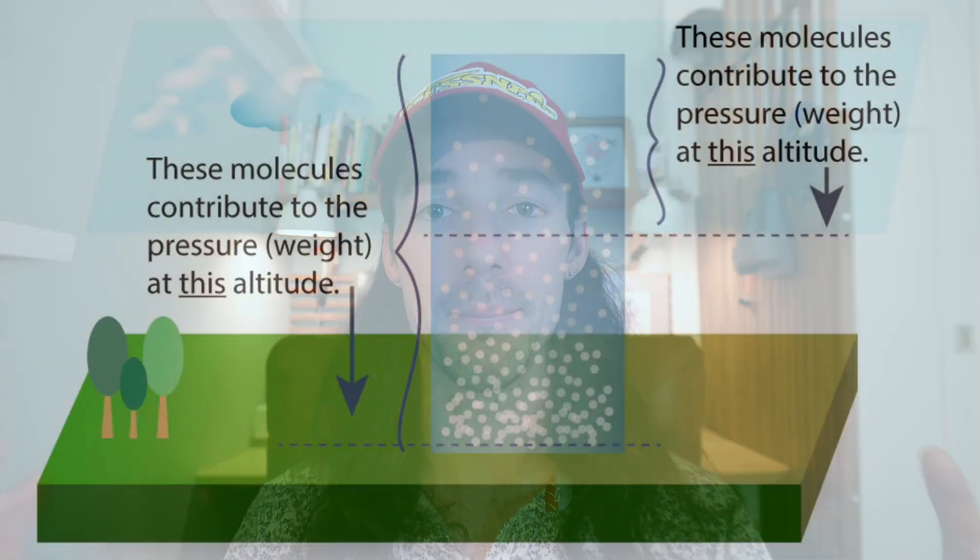Static pressure is the atmospheric ambient air pressure. You might not notice it, but at all times there are air molecules pushing on everything in our atmosphere. Static pressure changes with your altitude — the higher you go, the lower the static pressure, and the lower you go, the higher the static pressure.